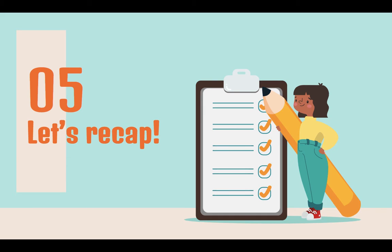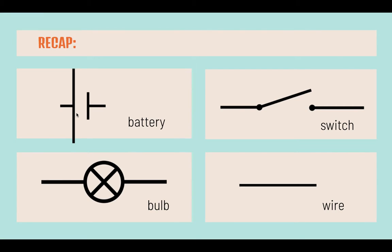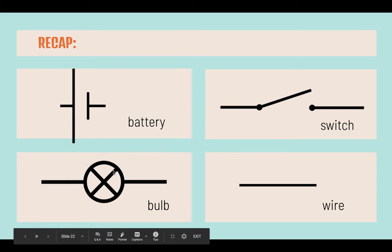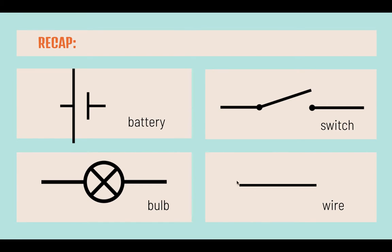Now let's recap on how the different circuit components should be drawn in a circuit diagram. The battery should be drawn with one end shorter than the other — the positive sign is the longer end, while the negative sign is the shorter end. A bulb should be drawn as a circle with an X inside. The wire is simply a straight line. An open switch has a gap, while a closed switch has a horizontal line joining both ends with no gaps to allow electric current to flow.